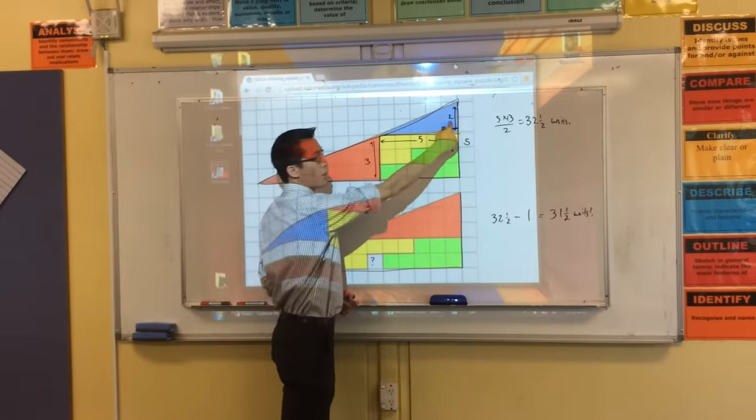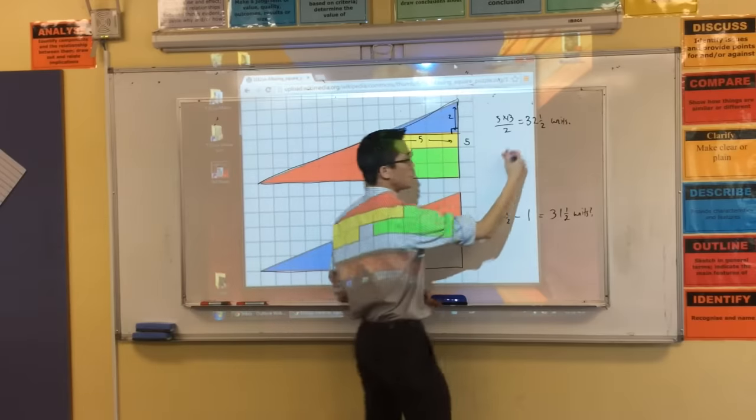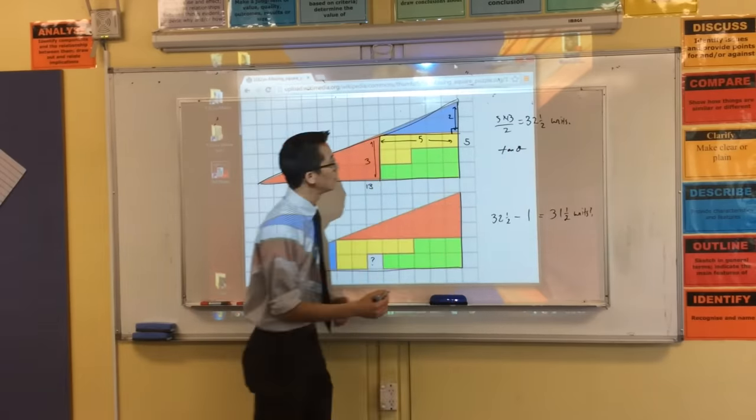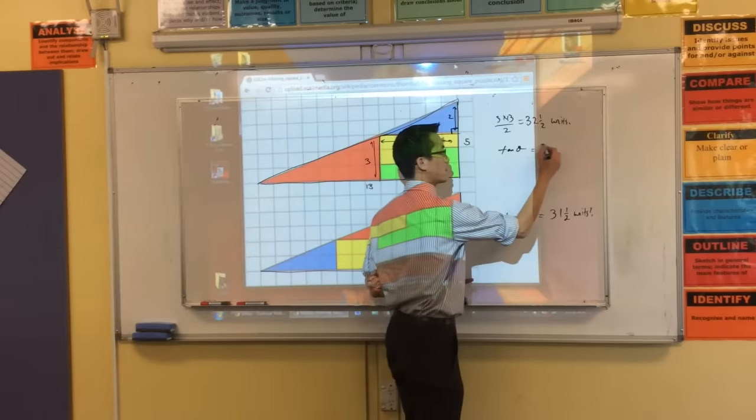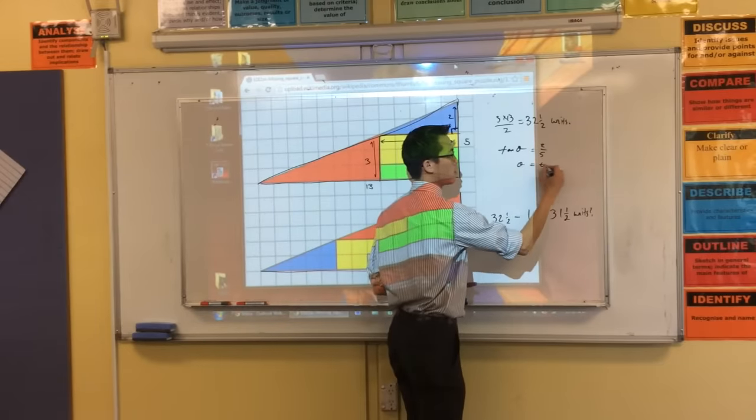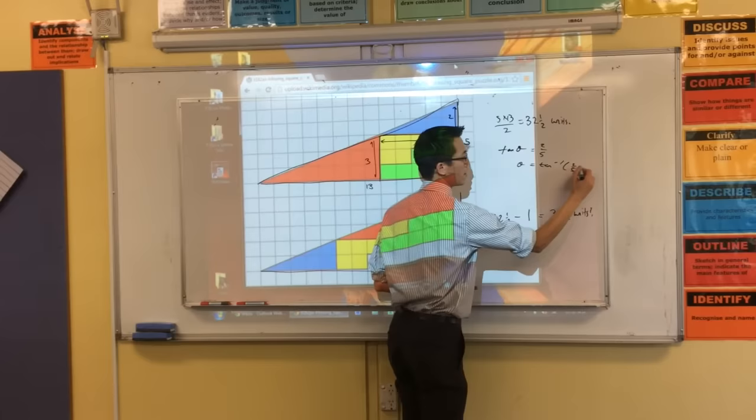Because you've got 2, you've got 5, that's opposite and adjacent, right? So, you would say tan of that angle, let's call it theta, is 2 over 5, yes?